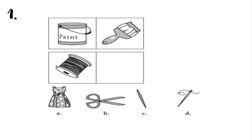Let's take a look at number one. We have several pictures — a paint and a paintbrush, followed by a pool of thread. The choices we have are: should it be a dress, a pair of scissors, an artist paintbrush, or a needle?